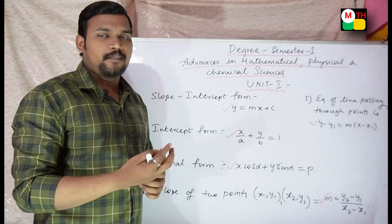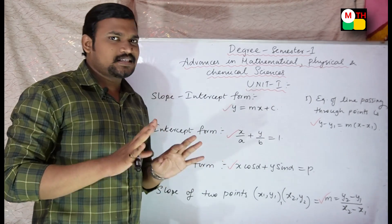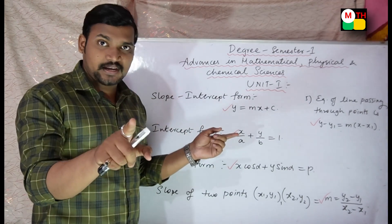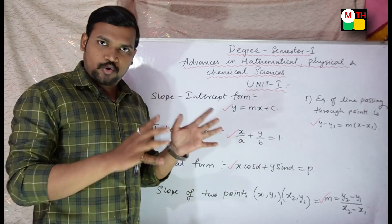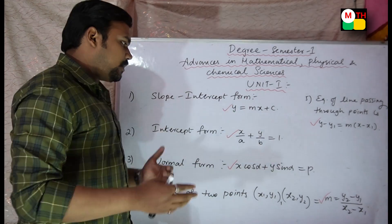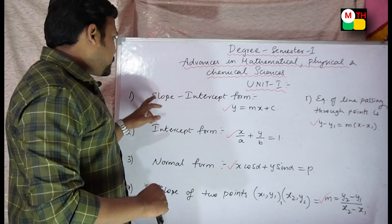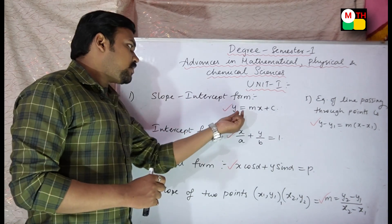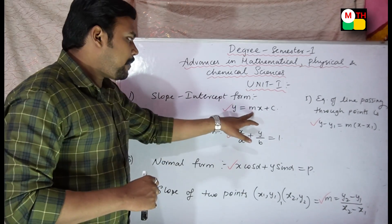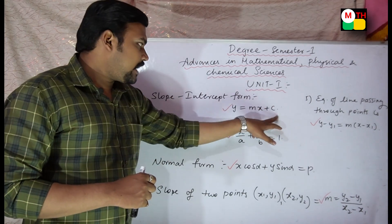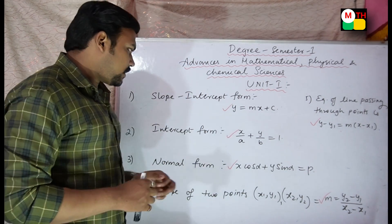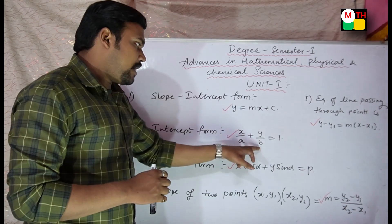We will cover slope-intercept form and intercept form. This is the basics class — we will do the introduction part. Slope-intercept form: Y is equal to mx plus c, where m is the slope and c is the y-intercept value. Intercept form: x by a plus y by b equal to 1, where a is the x-intercept and b is the y-intercept.